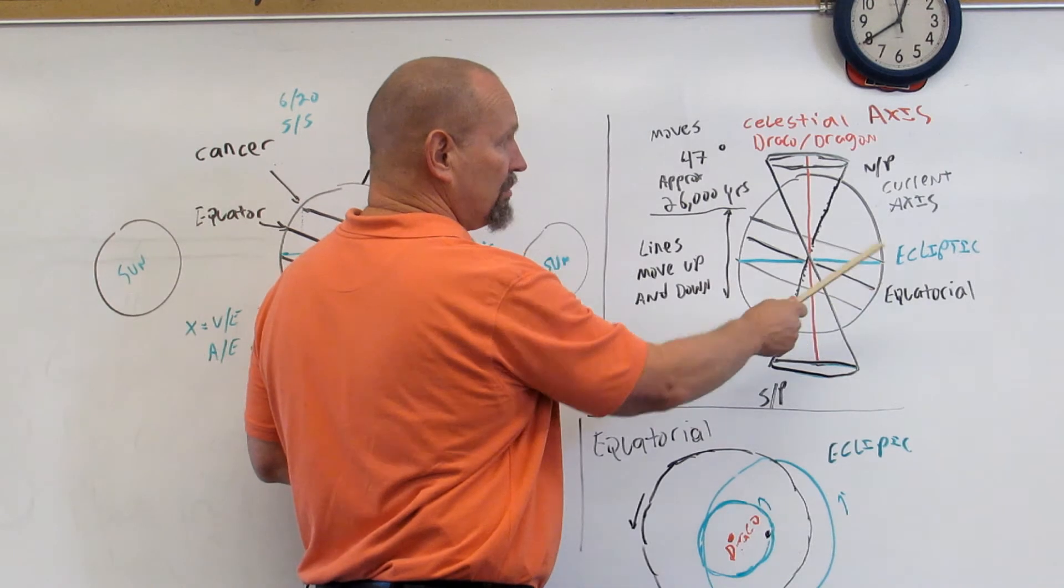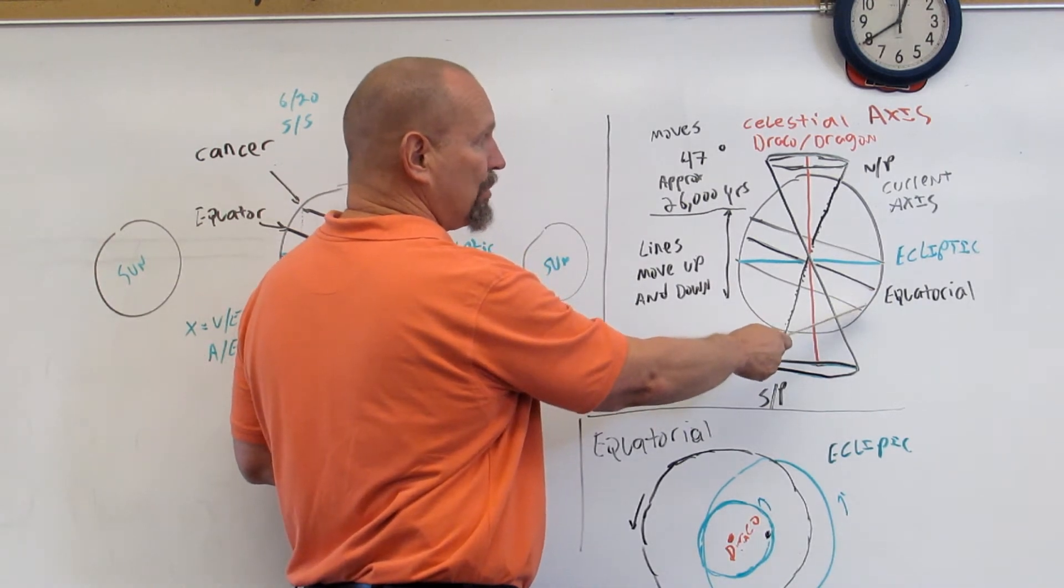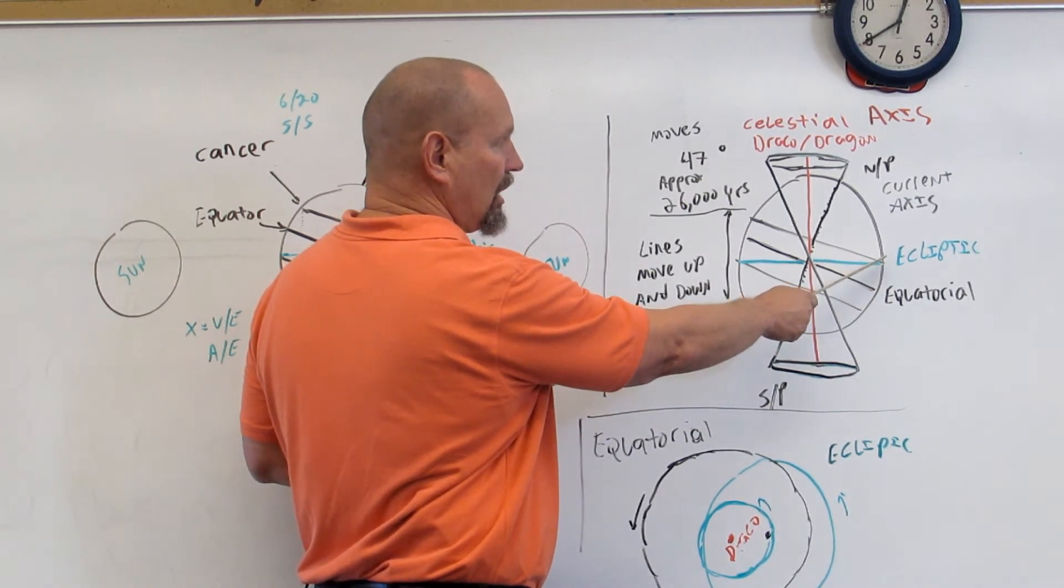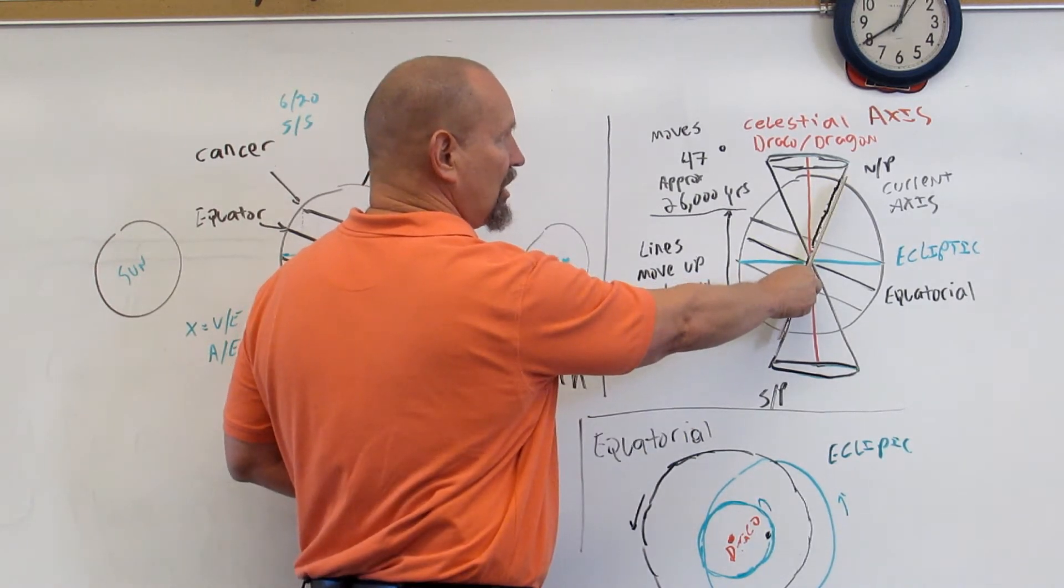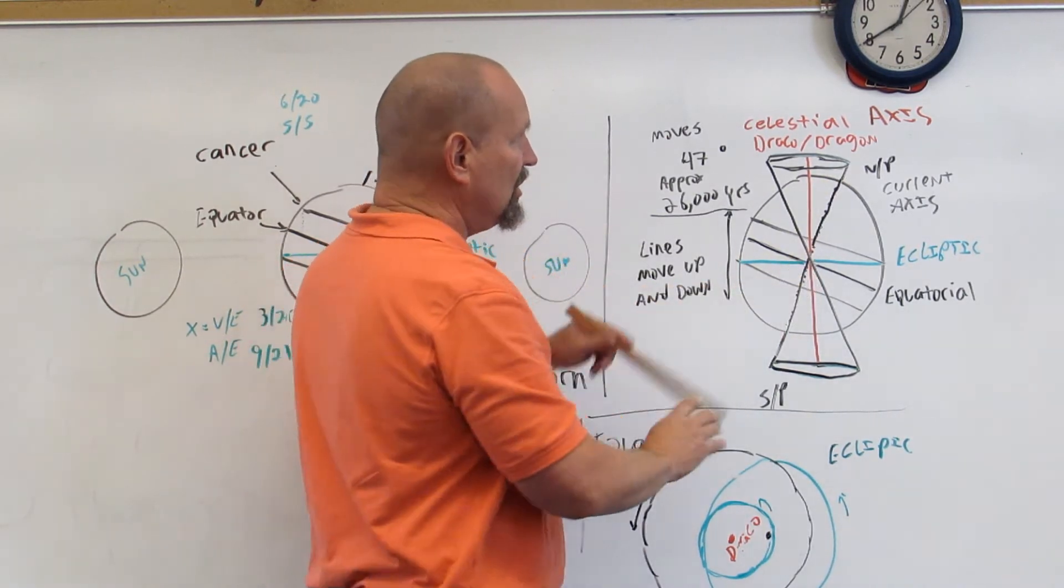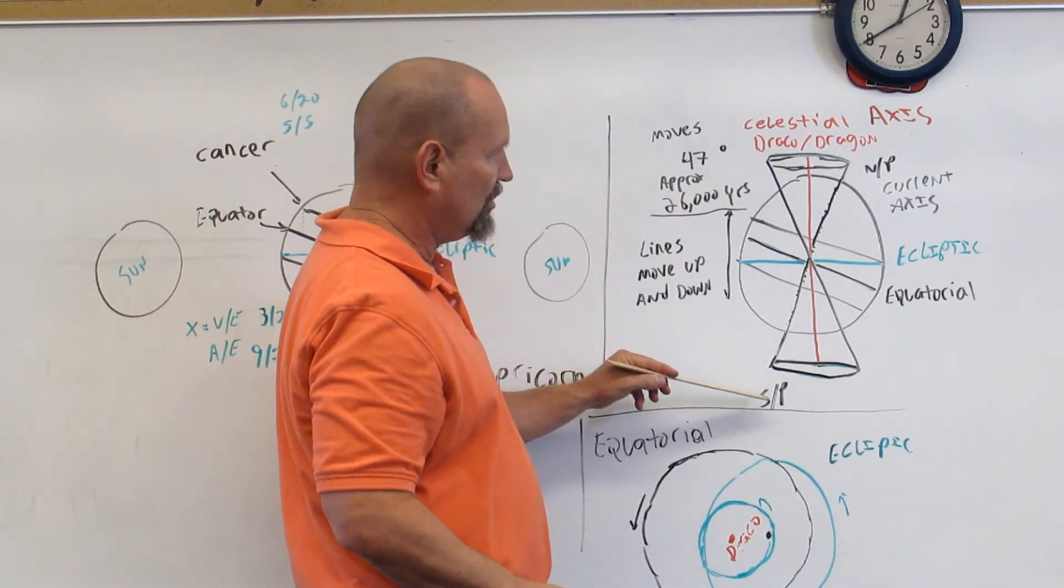This is our equator. This is the Tropic of Capricorn. This is the Tropic of Cancer. This is our current axis orientation, 23 and a half degrees. Your North Pole here, your South Pole here.